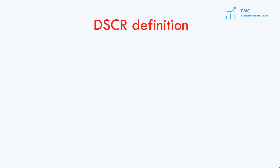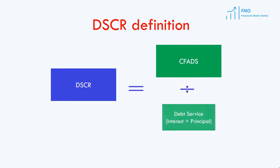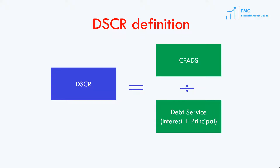One of the key ratios that lenders use to analyze the project's ability to repay debt is the Debt Service Coverage Ratio, or DSCR. DSCR is a ratio generated by the project, and this project's DSCR is compared to the DSCR required by the lenders.